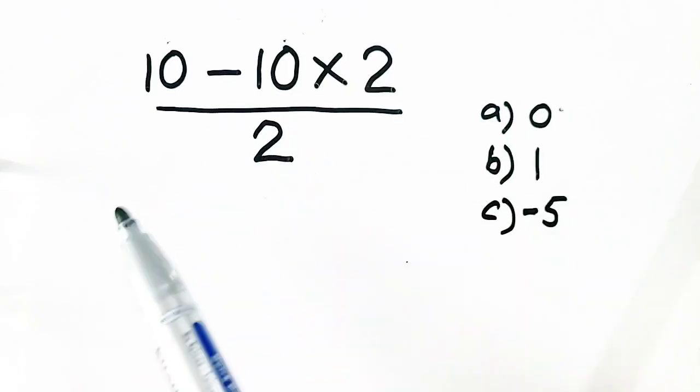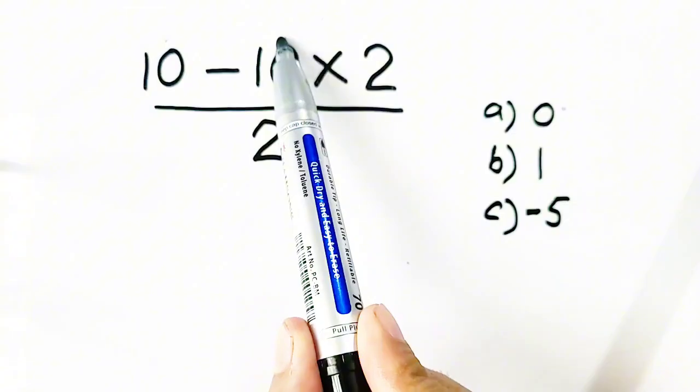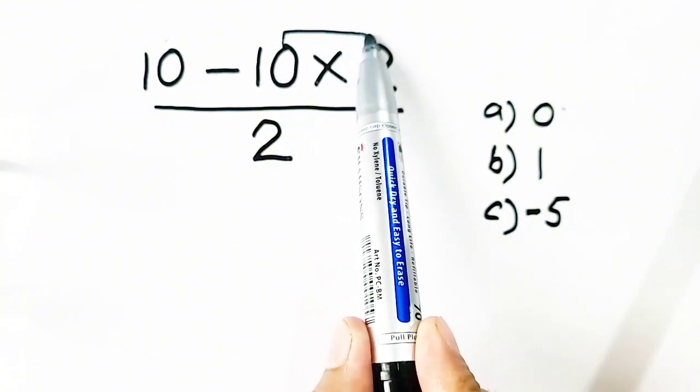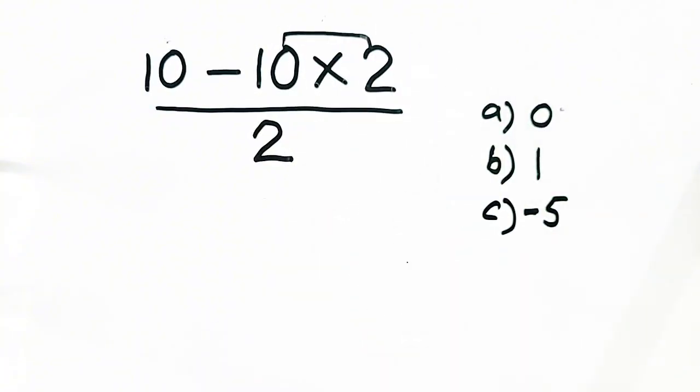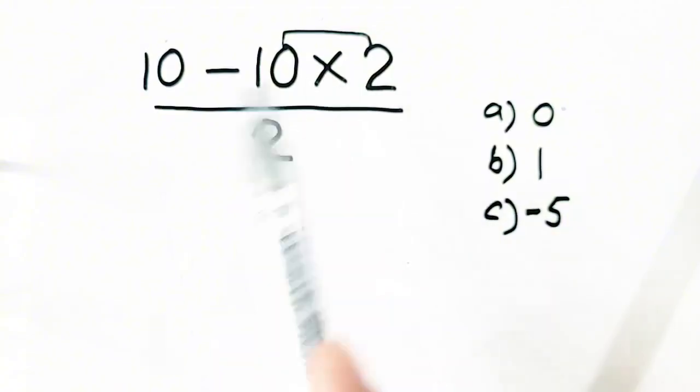So now let us solve it. First of all, we have to multiply these two numbers because according to PEMDAS or BODMAS, we have to solve multiplication first.